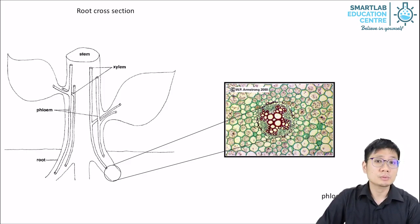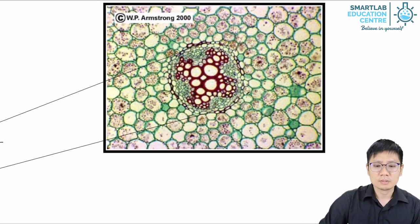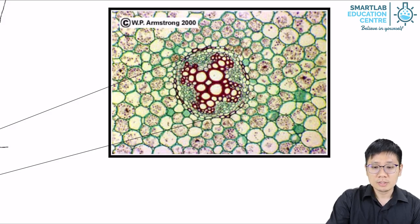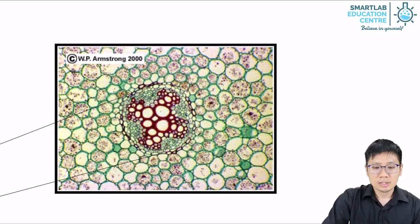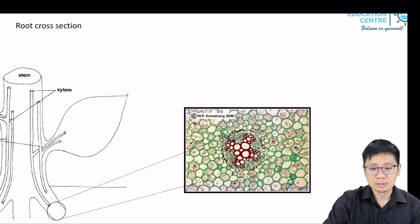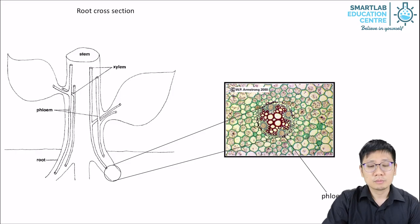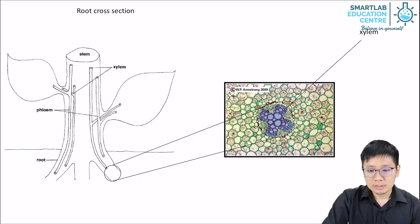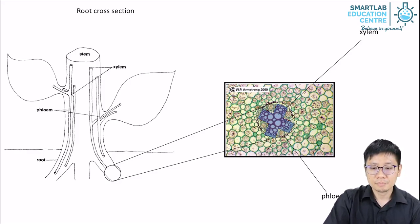If we look at different parts of a plant, the arrangement of the xylem and phloem can be quite different. In a root cross-section, there is a rough cross shape to it. The cells on the outside are the phloem — they sit in between the spokes of this cross shape. The inner part, that big cross shape, is the xylem. This arrangement is quite different from that in the stem.